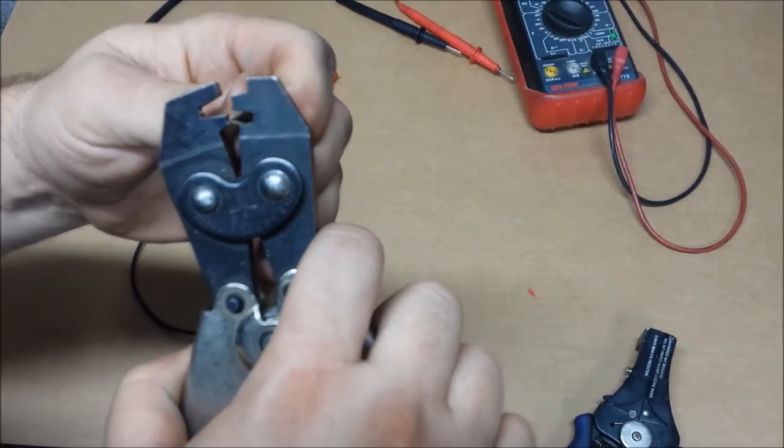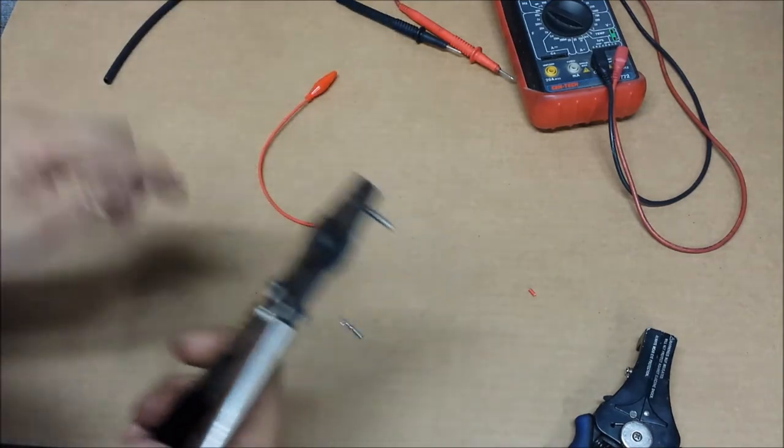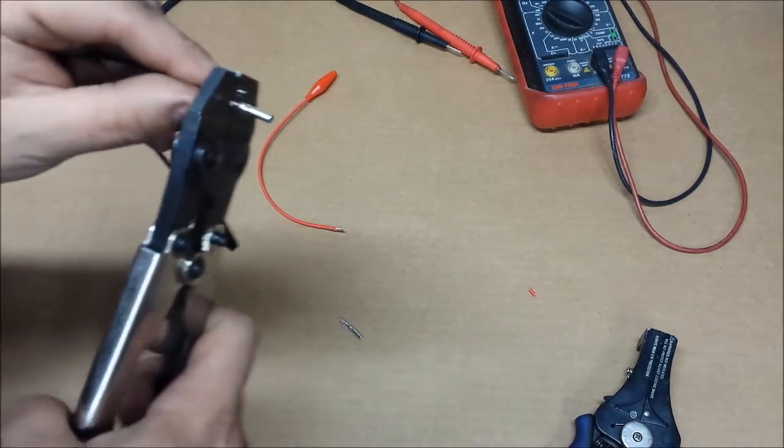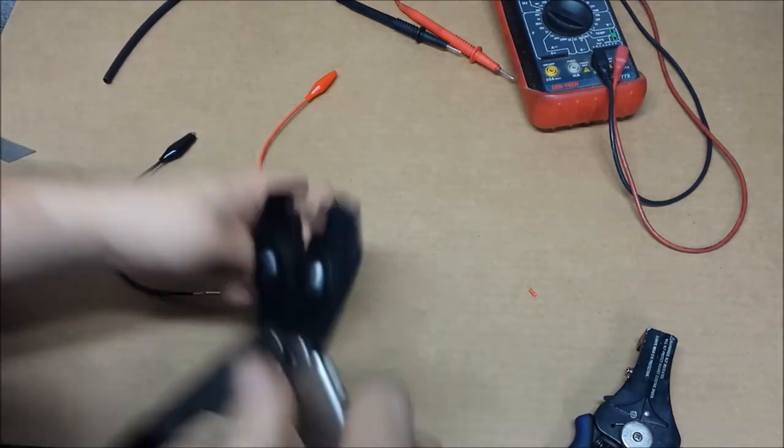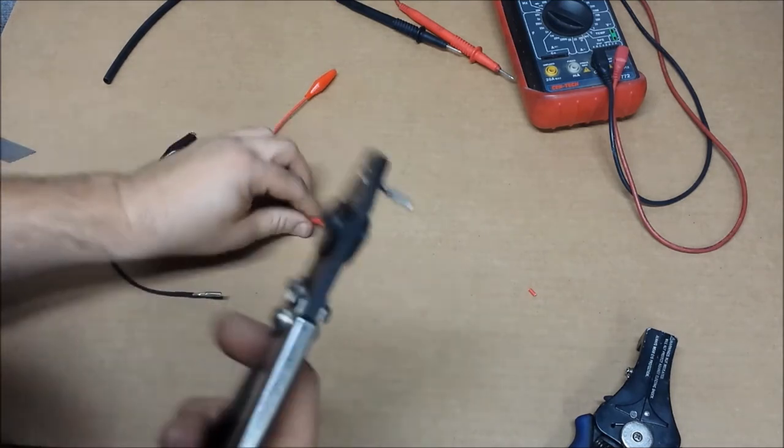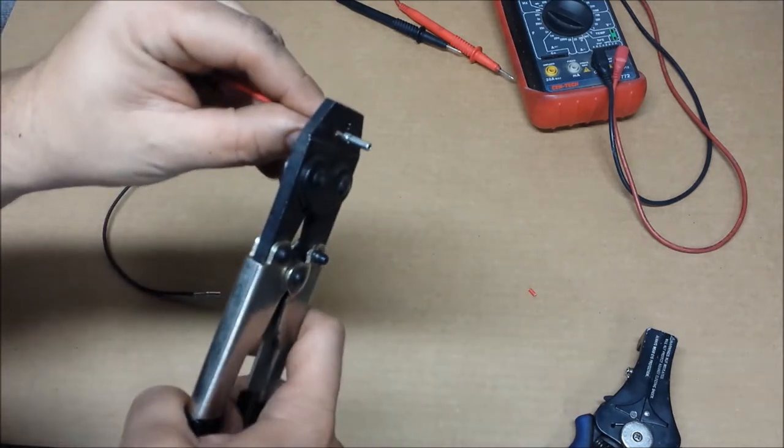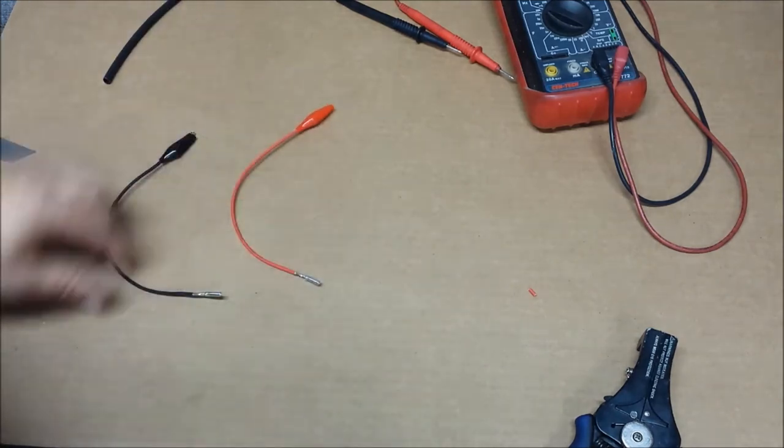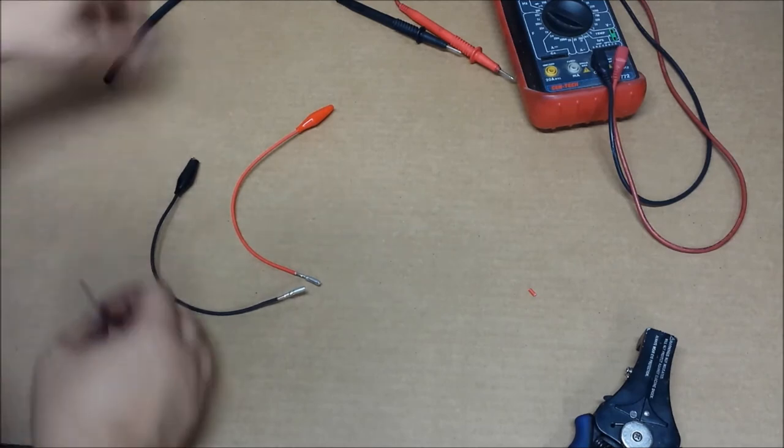Put those into the small crimp cavity. Crimp them on. And those are on.